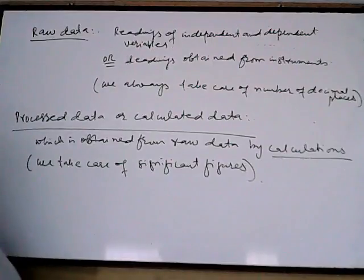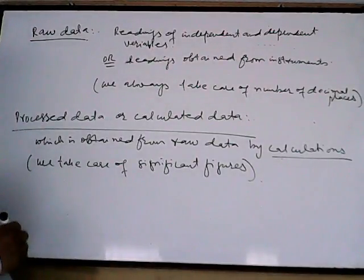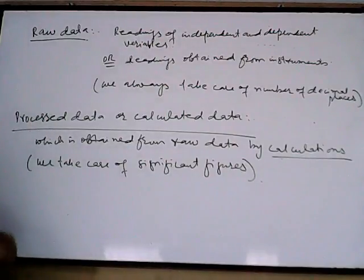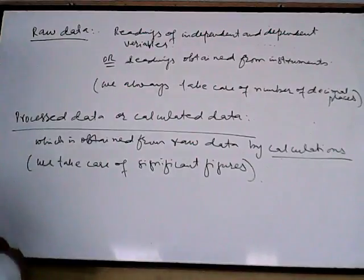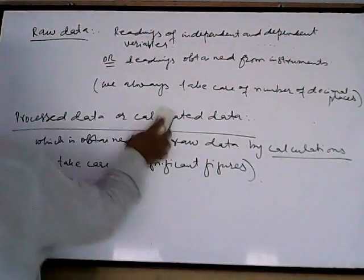To summarize: raw data is obtained from instruments and we take care of the number of decimal places. Processed or calculated data is obtained from calculations on raw data, and we take care of significant figures. You must know the basic rules for significant figures and rounding — these are essential for practicals.